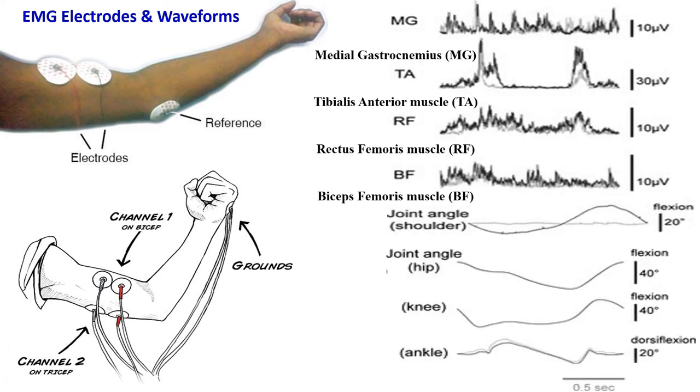To measure the EMG, we place electrodes across the muscle. We use two electrodes to detect the biopotential and one electrode as a reference. We can use a single channel or multi-channel lead system in EMG. The EMG waveform generated for different muscles has been shown in the picture.